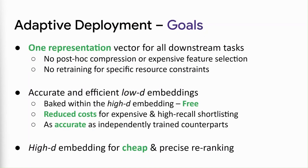The primary goal of adaptive deployment involves one representation vector for all downstream tasks, which does not require any post-hoc compression or expensive feature selection, and also does not require retraining for specific resource constraints. We expect to obtain accurate and efficient low-dimensional embeddings, which are baked within the high-dimensional embeddings for free, that could be used for more expensive and high-recall shortlisting as part of web-scale search and classification. We want these low-dimensional representations to be as accurate as independently trained counterparts.